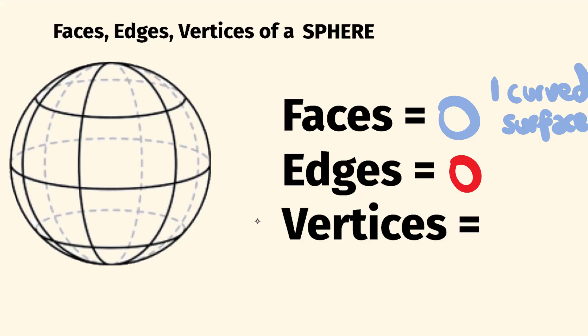Finally, the number of vertices — these are the corners. Probably no imagination needed either. There are no corners on a sphere. So the number of vertices on a sphere is zero.